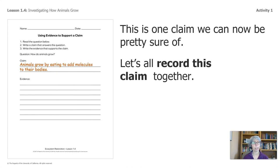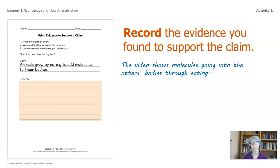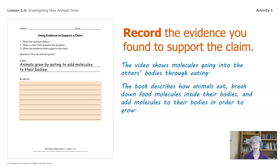Here's a claim we can all agree on: animals grow by eating to add molecules to their bodies. Now we'll record the evidence that you found to support your claim — any piece of paper will do if you don't have the packet. The video shows molecules going into the otters' bodies through eating — remember that fish it was chomping at? The book describes how animals eat, break down food molecules inside their bodies, and add molecules to their bodies in order to grow. Write it down in the evidence section to support the claim.